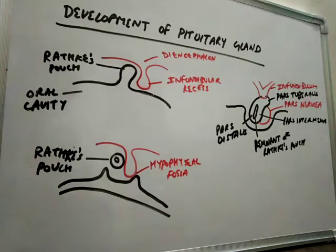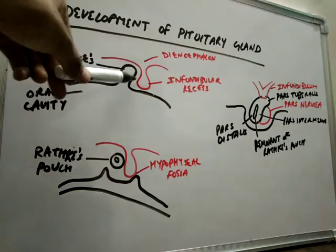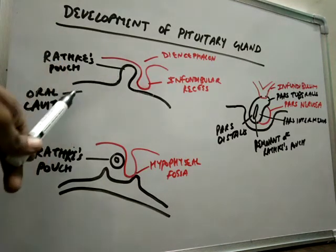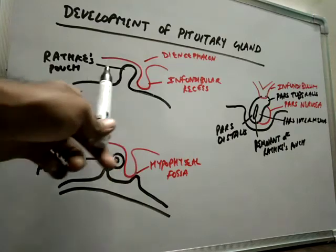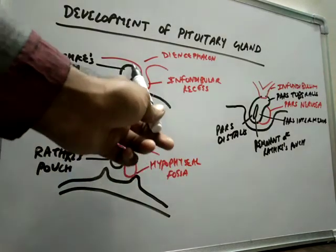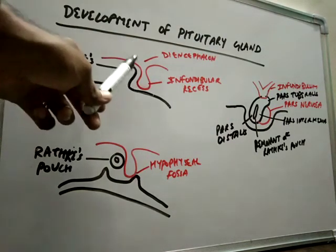This is the Rathke's pouch you are seeing here. Rathke's pouch develops from the roof of the primitive mouth. This is the oral cavity — from the roof of the primitive mouth, the Rathke's pouch will develop. The next diverticulum is the infundibular recess.